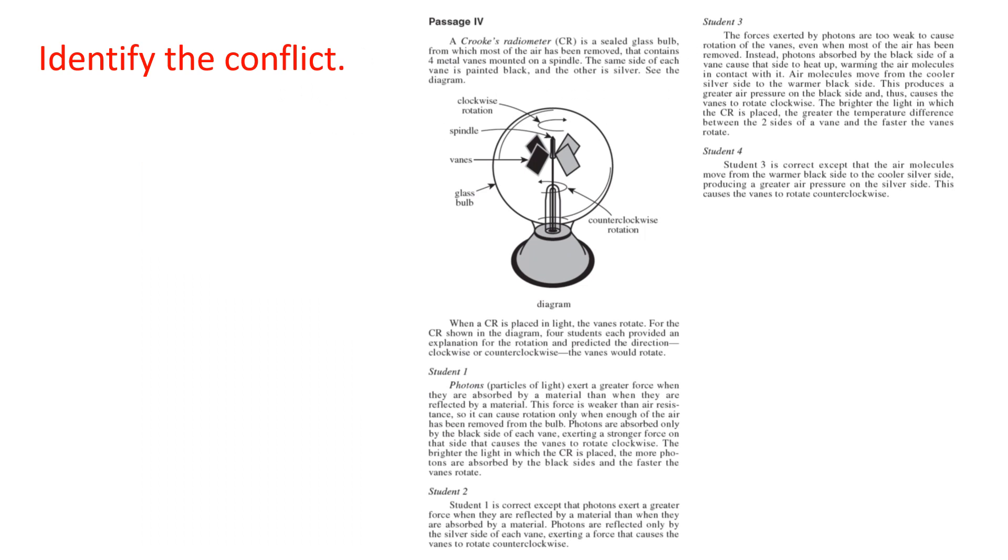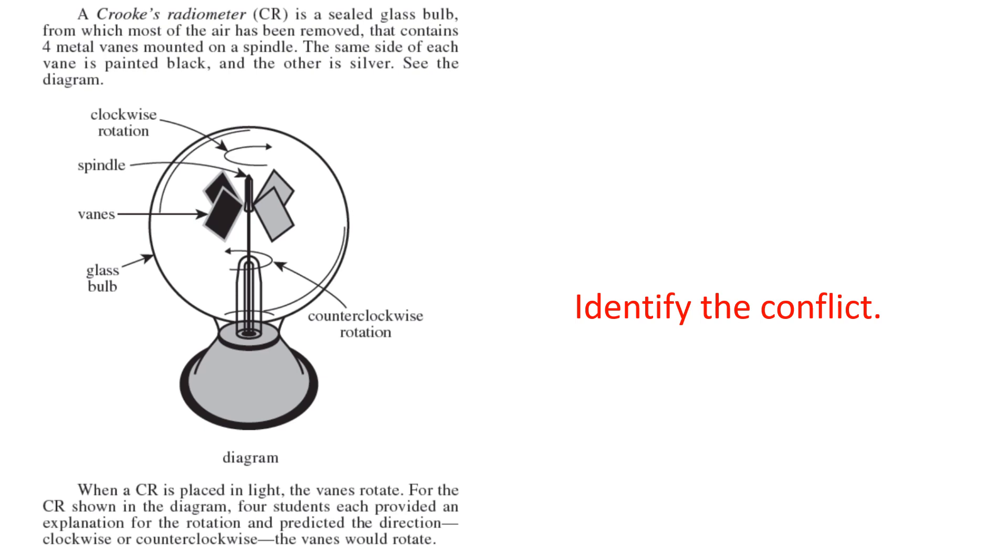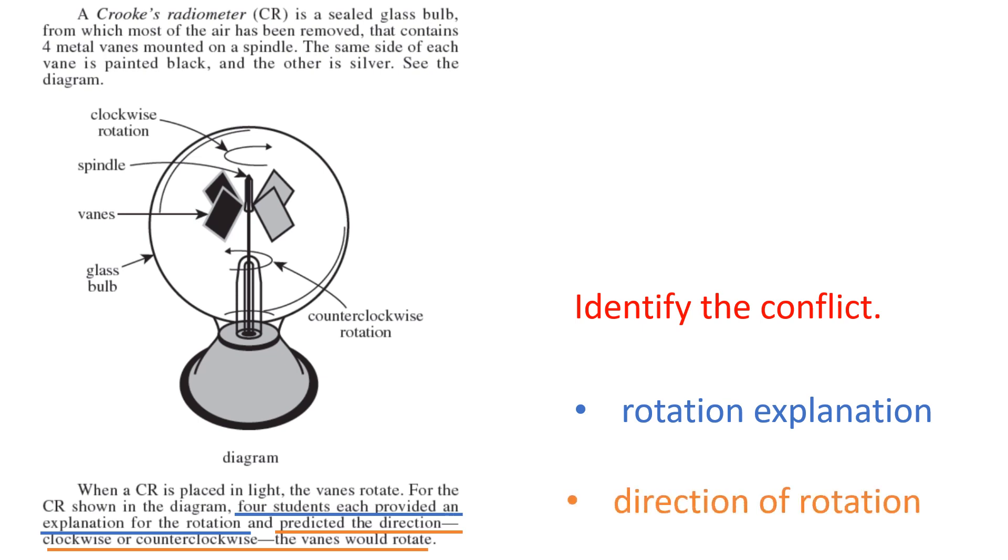Your first step is to identify the conflict, and that's usually the last paragraph of the introduction. Sometimes that's all it is, a short explanation of what's the conflict. Here, they're telling us the Crook's radiometer is a sealed glass bulb from which the air has been removed. It has this nice picture of it. The air is removed, and the spindles spin when they encounter light. So what's the conflict? Four students each provide an explanation for rotation, so rotation explanation, and predict the clockwise or counterclockwise rotations. Why does it happen? And what direction do the spindles rotate?